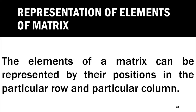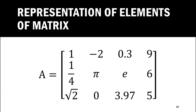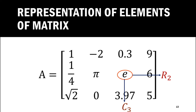Now, representation of elements of a matrix: the elements of a matrix can be represented by their positions in the particular row and particular column. In the previous matrix, if we denote it by capital A and we want the position of element E, we first find in which row E belongs — E belongs to the second row. Then we find in which column E belongs — the element E belongs to C3, that is the third column. So it is denoted by the letter A with suffix 2, 3.